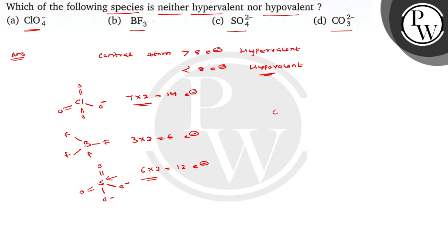In the case of carbonate, it is C with double bond O, O⁻, and O⁻. The central atom is carbon and the total number of bond pairs is 4, therefore the total number of electrons around the central atom is 8. So in the case of carbonate, it is neither hypervalent nor hypovalent. The correct option is D. I hope you understood. Best of luck.